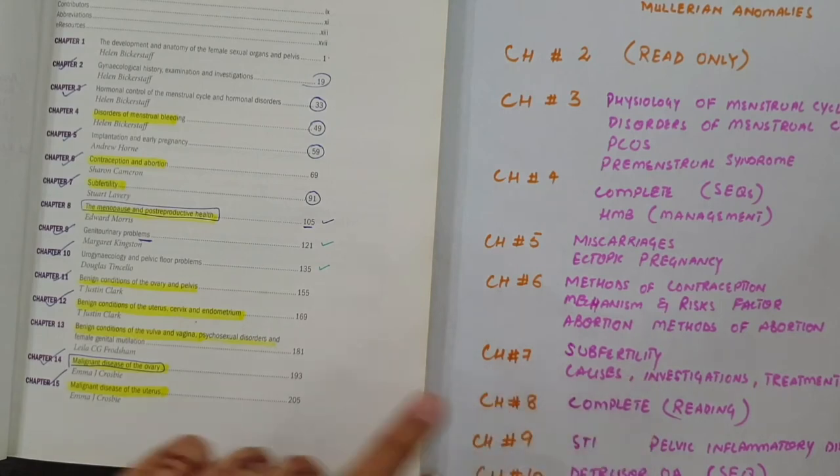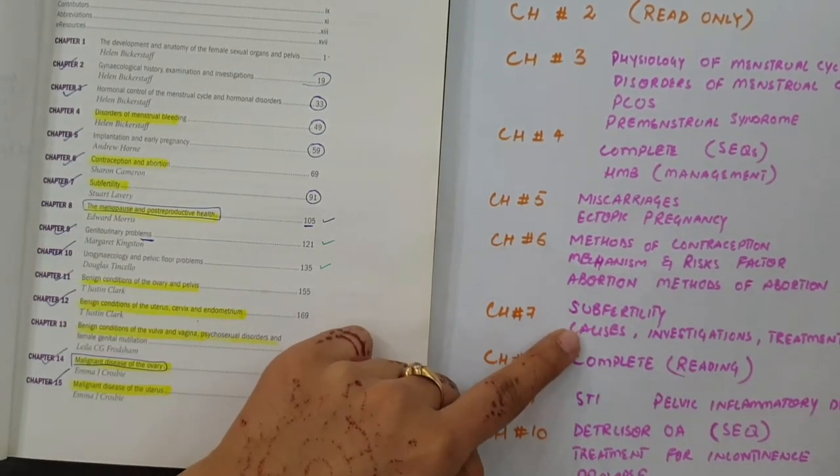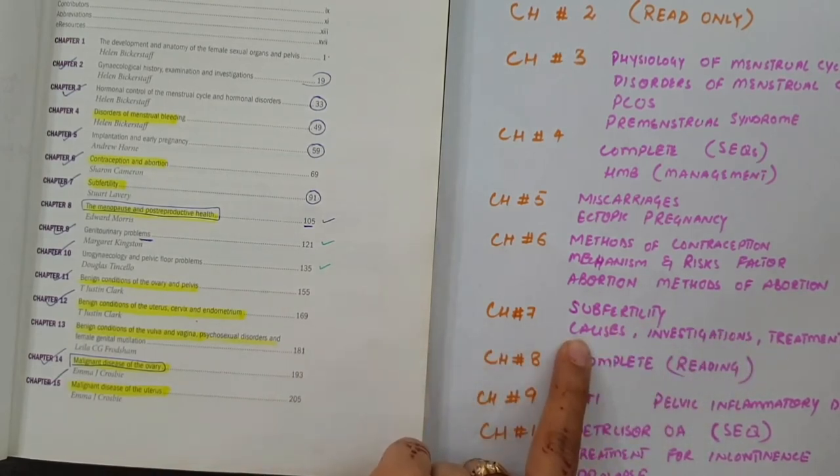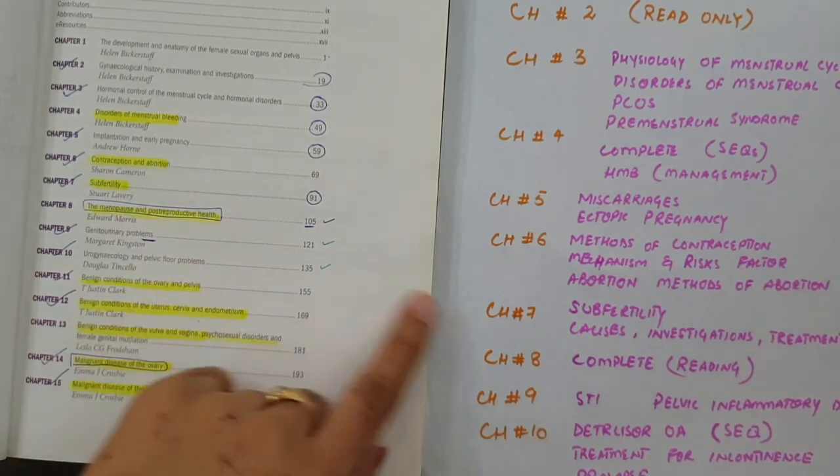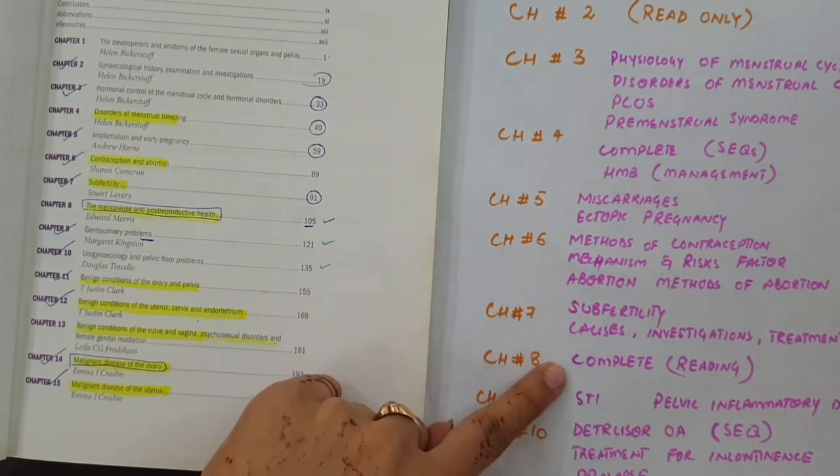The seventh chapter is about sub-fertility. Sub-fertility causes, investigation and treatment. The entire chapter is very important for this. The whole chapter is called Menopause and Post-Reproductive Health. The eighth chapter is complete. We have to read the whole chapter. The SEQ is less important for this.